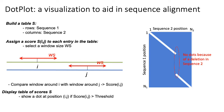In the heat map on the right, blue means zero, so there's no strong similarity between most positions in sequence one and sequence two. But where you see the white lines, that's where you have high sequence similarity between position i and j across sequences one and two.